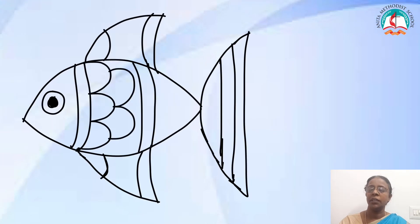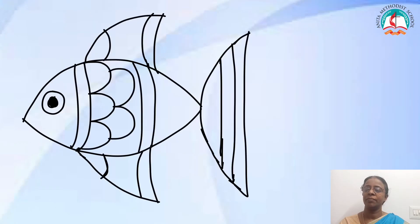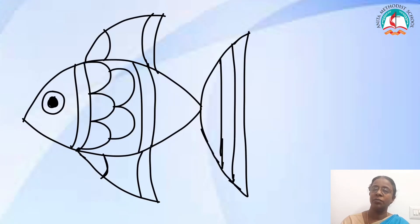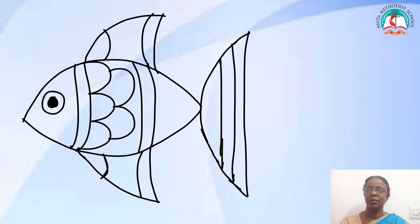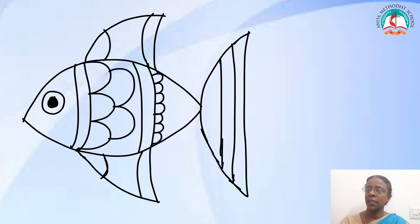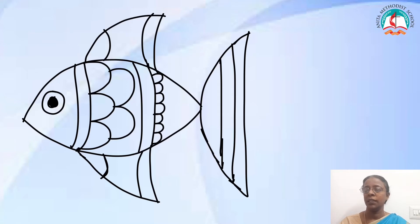Now on the body draw some curves like this. Make sure that the curves don't cross the lines on both sides. Now you are going to add detail design on this structure — draw small curves beside those two lines.